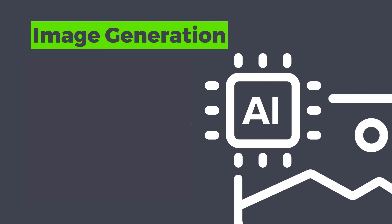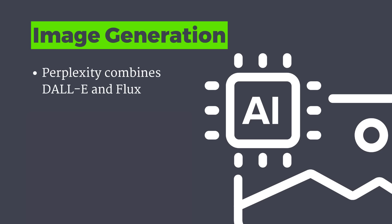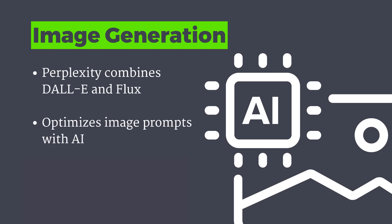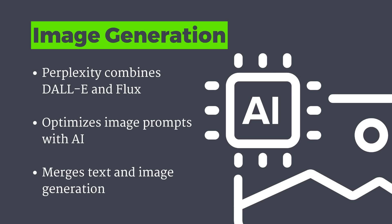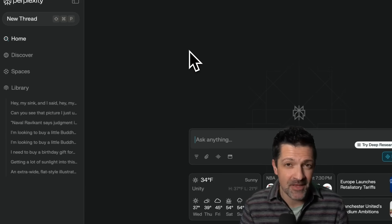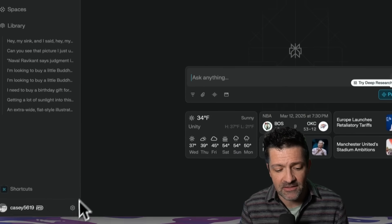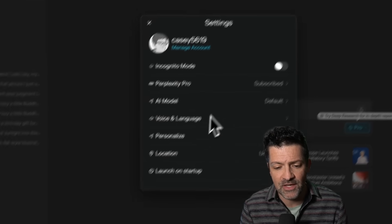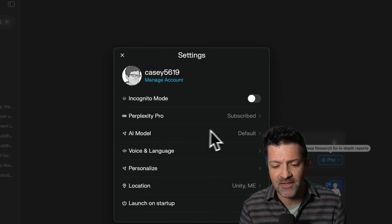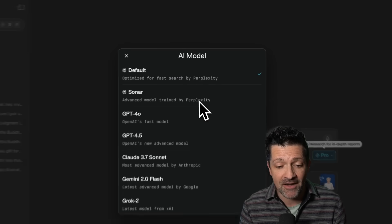Perplexity isn't just for text. It brings together some of the cutting-edge image generation tools out there, including DALL-E and Flux. It's super cool to combine this with different large language models and use those powerful models to help you decide on the right image prompt that you then feed into these image generation tools. But there are a couple of little hacks you need to know about for it to work right.